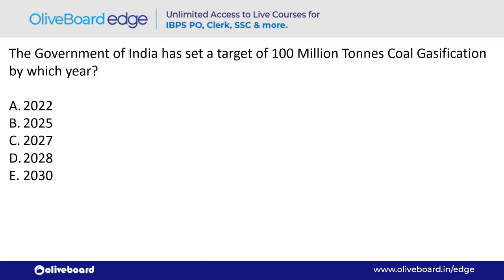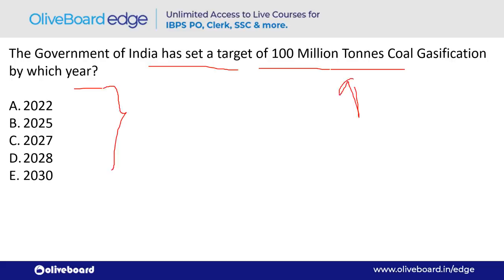The Government of India has set a target of 100 million tonnes of coal gasification by which year? The answer is 2030 — option E.